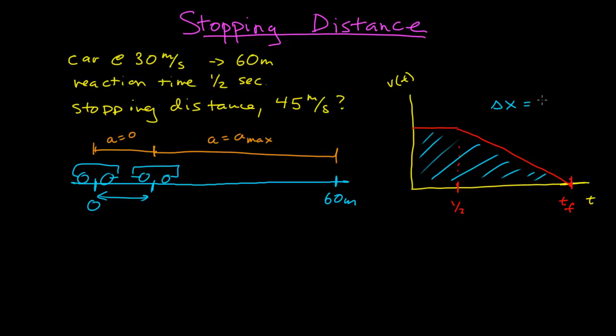I'm given that the total displacement of the object is 60 meters, and the integral of the velocity versus time curve is simply the area underneath the curve. Since the area is simply a rectangle and a triangle, that's a trivial relationship to create. The total displacement is the integral, which is the area under the curve. The first area — the rectangle — is base times height. The initial velocity is 30 meters per second, so the height is 30, and the base is the reaction time of one-half second, giving an area of 15 for this first rectangle.